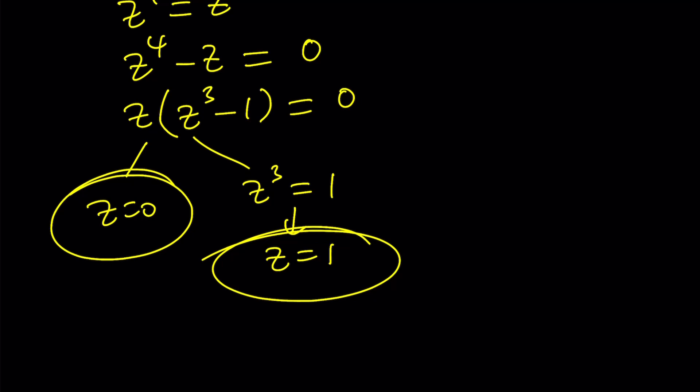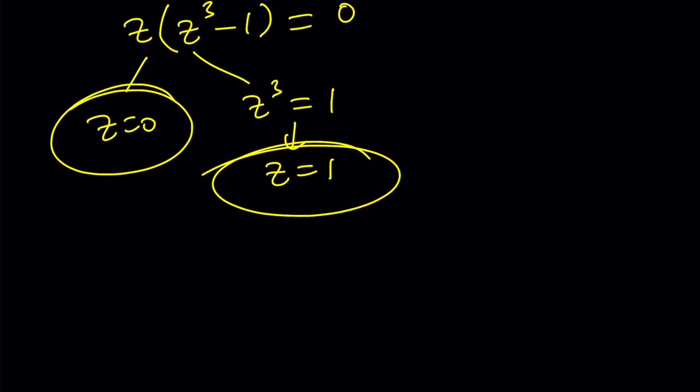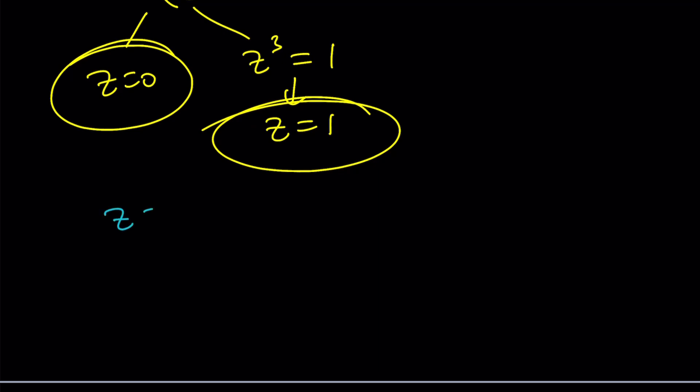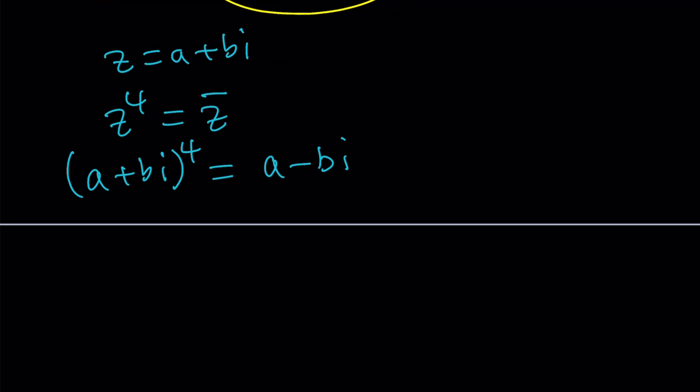Now second scenario. What happens if z is not real? Then the interesting part starts. Let the fun begin. Now if z is not real we can go ahead and replace it with A plus B I but this time B does not equal zero. So we have z to the fourth equals z bar. Replace z with A plus B I raise it to the fourth power and then set it equal to A minus B I.